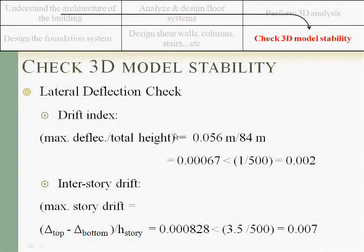Also, we can check the lateral deflection check, the drift, with the maximum deflection per the total height. The maximum deflection we get is around 56 mm over the 84 m. We can get that the ratio is less than the 1 over 500 specified in the code.